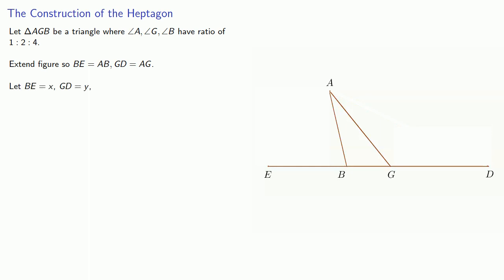And to avoid the somewhat complicated geometric formulation, we'll let BE equal to x and GD equal to y. And for convenience, we'll let the base of our triangle have length 1.